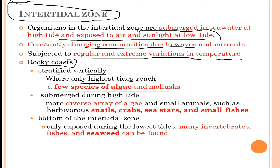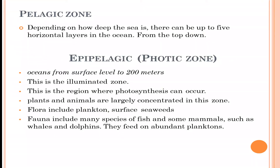Where only the highest tides reach, there are a few species of algae and mollusks. At intermediate levels, there is a more diverse area of algae and small animals such as herbivorous snails, crabs, sea stars, and small fishes. At the bottom of the intertidal zone, exposed only during the lowest tides, many invertebrates, fishes, and seaweeds can be found.